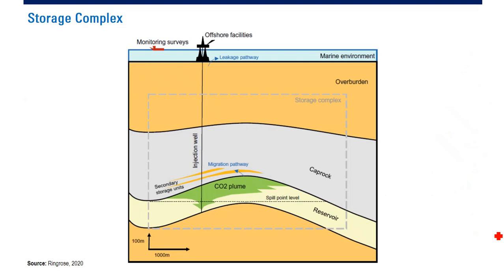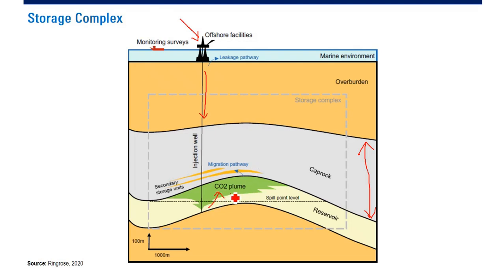This is another storage complex. You need a very thick cap rock. This is the offshore or onshore facility — you have the well here, CO2 will be injected. In the reservoir, the flow of CO2 is called the CO2 plume. This is the reservoir zone and this is the cap rock zone. It is better if the cap rock is thick.